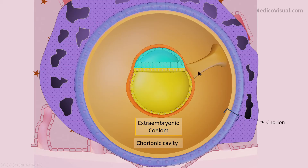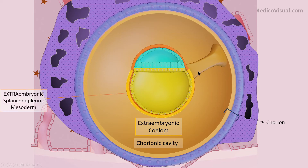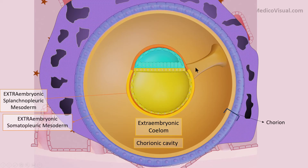The area where there is still no cavitation at this point is called the connecting stalk. With the formation of the extraembryonic coelom or chorionic cavity, the extraembryonic mesoderm is split into two parts: the part lining the outside of the yolk sac or umbilical vesicle is called extraembryonic splanchnopleuric mesoderm, and the remaining part lining the amnion as well as the cytotrophoblast is called extraembryonic somatopleuric mesoderm. The part connecting the embryo with its two cavities to the chorion is called the connecting stalk, and the cavities formed within the syncytiotrophoblast are called lacunae.